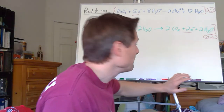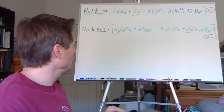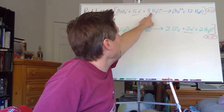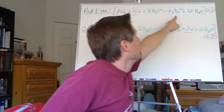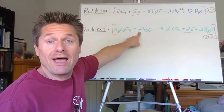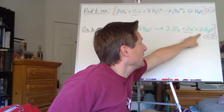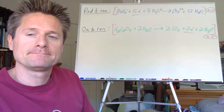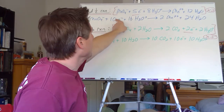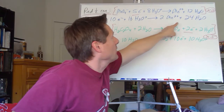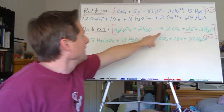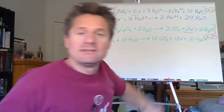Let's rewrite both half reactions multiplied out. Multiply the reduction by two: 2 MnO4-, ten electrons, 16 H3O+, two Mn2+, and 24 waters. Multiply the oxidation by five: five oxalic acids, ten waters, ten CO2, ten electrons, and ten hydroniums. Two times five is ten electrons on each side — when we recombine them, those ten electrons will cancel out.